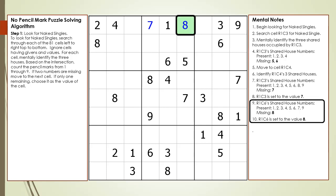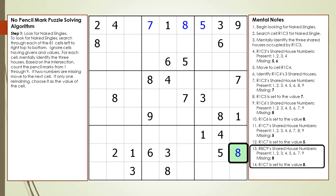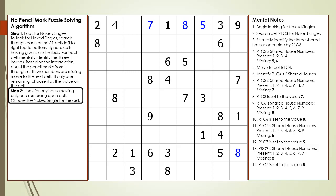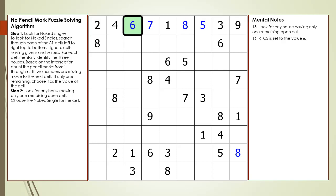We continue our search for naked singles. When we get to cell 1,6 we find another naked single, and we also find a naked single at cell 1,7. The naked single search continues. When we get to cell 8,9 we find another naked single. Next, we add step 2 to our algorithm: if any house has only one remaining open cell, we choose the naked single for that cell. For the house making up row 1, there is only one remaining open cell, so we choose the value 6 for cell 1,3.